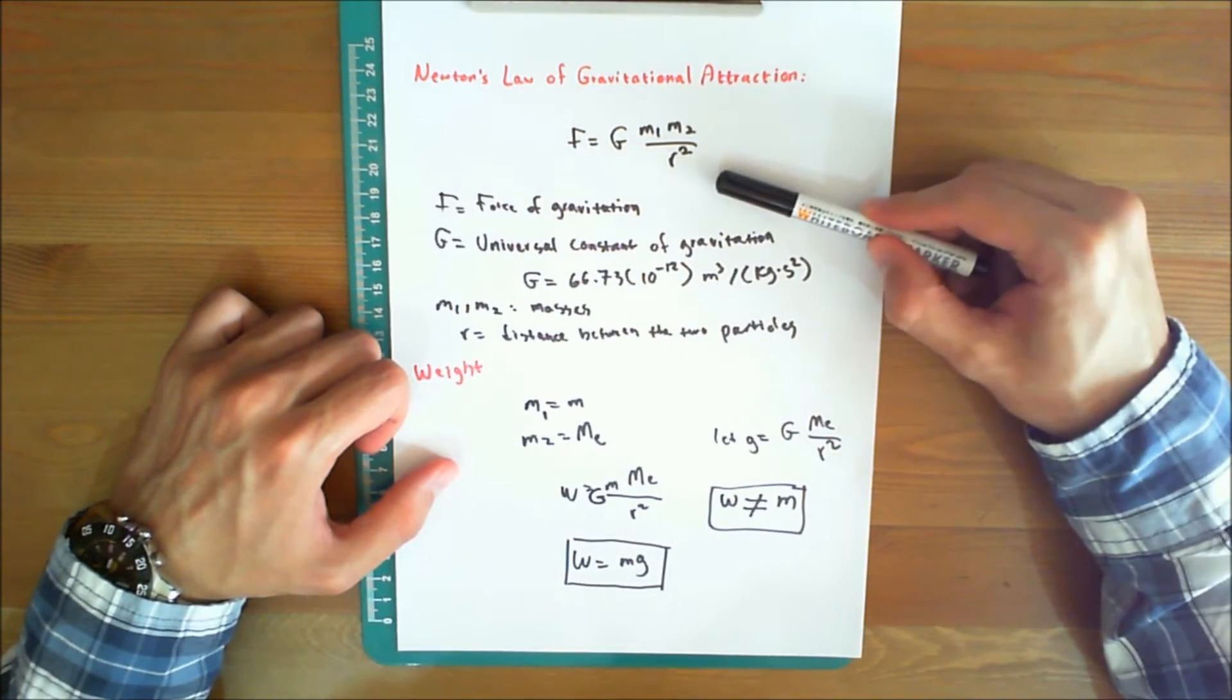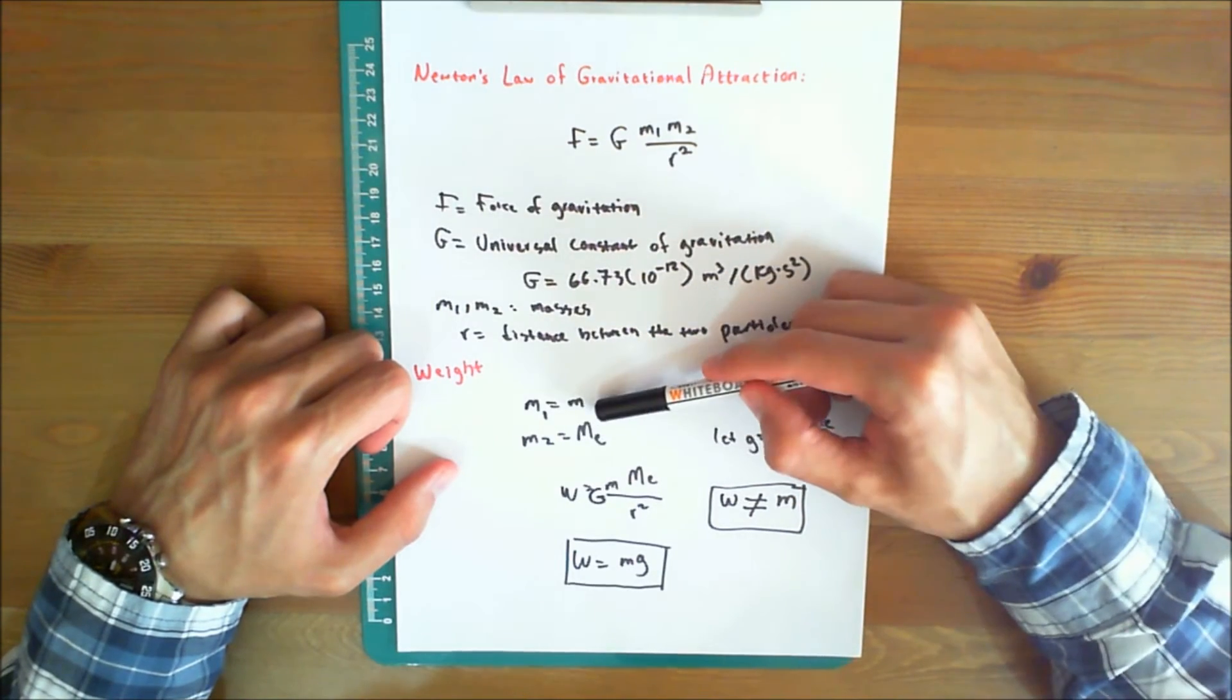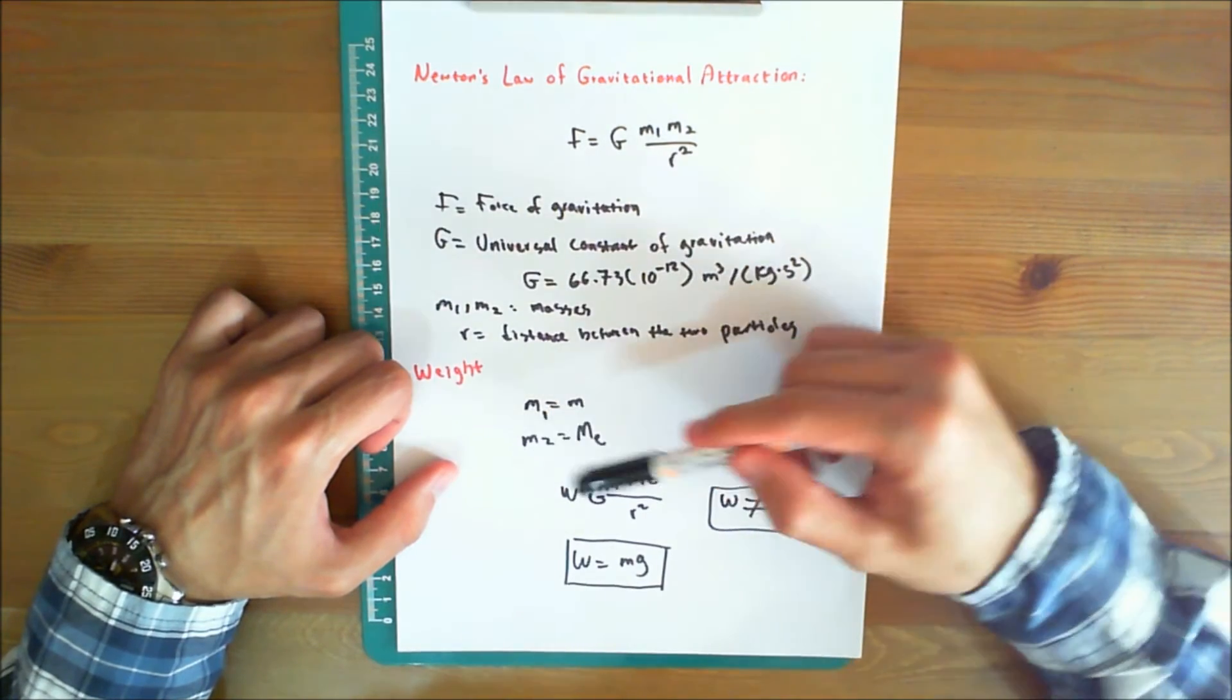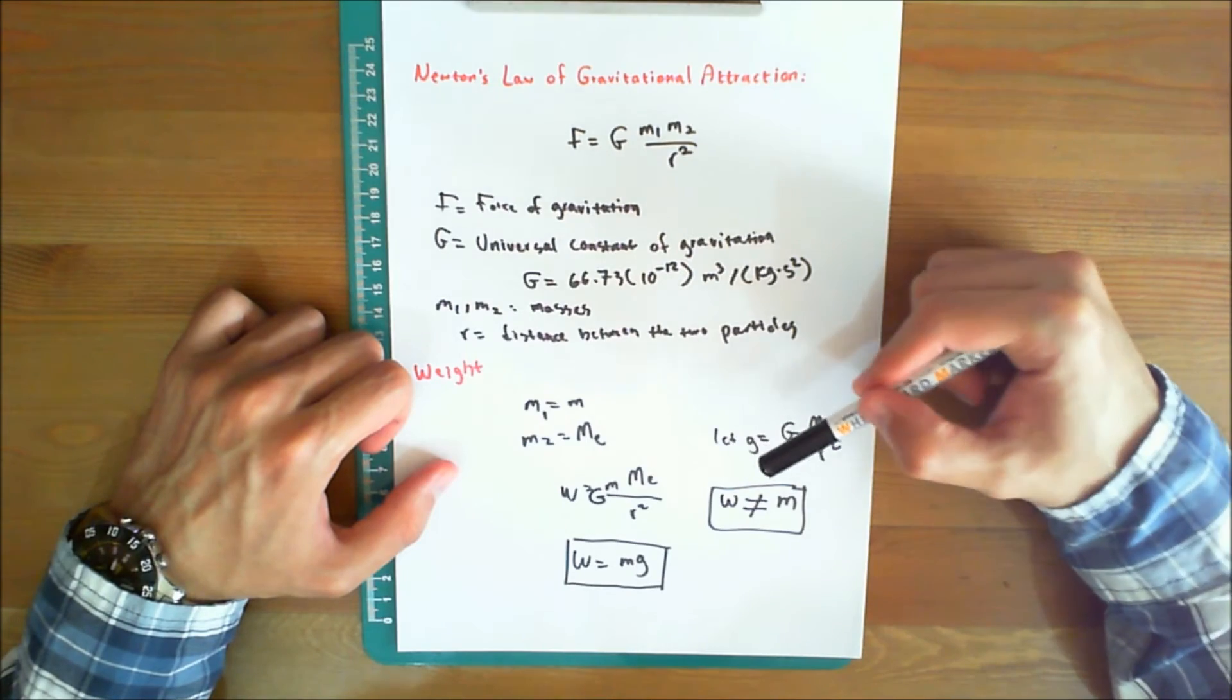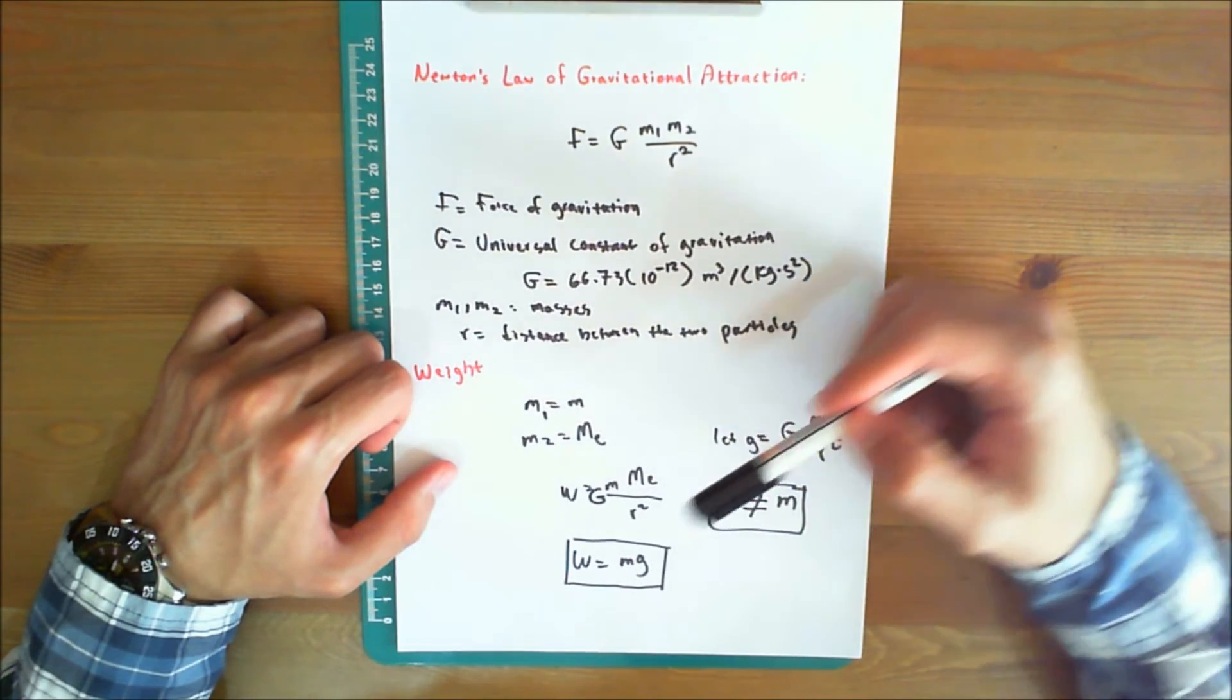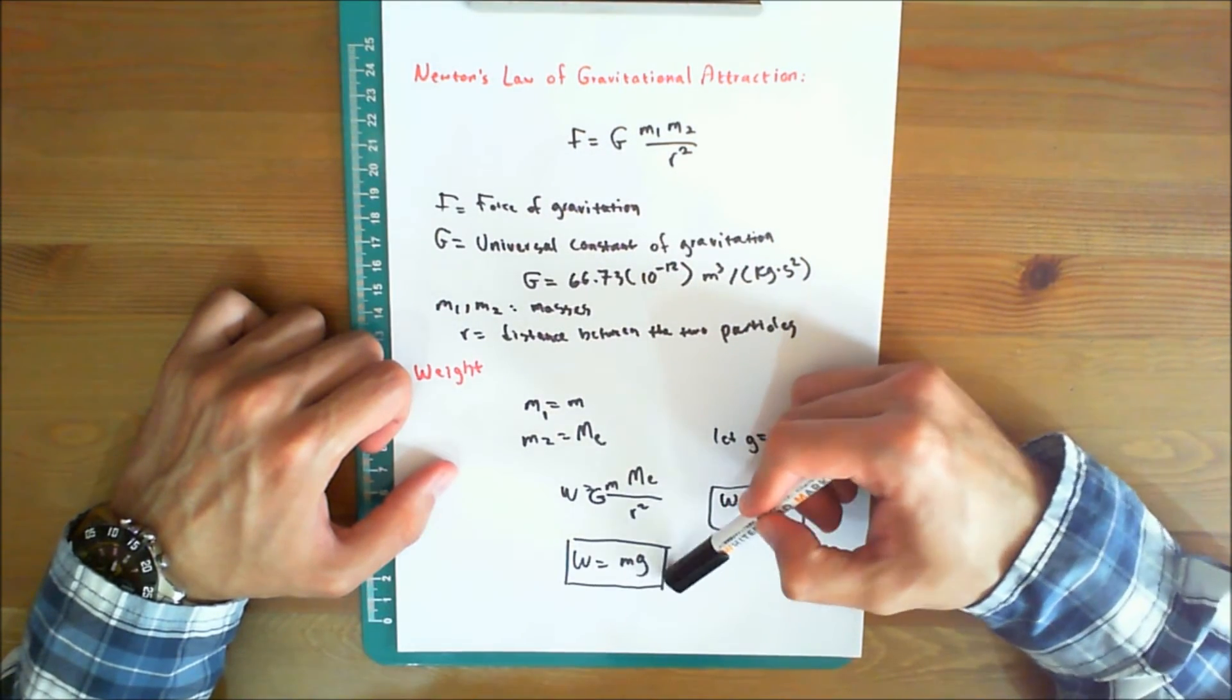From this equation, we can develop an approximate expression for finding the weight W of a particle having a mass m1 equals m. If we assume the Earth to be a non-rotating sphere of constant density and having a mass m2 equals mE, m Earth, then the r is the distance between the Earth's center and the particle. We have W equals G m mE over r squared. Letting g equals G mE over r squared yields W equals mg, the famous equation of weight.